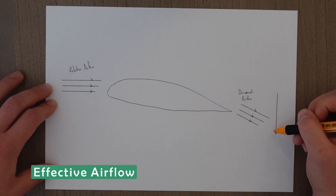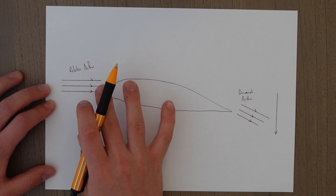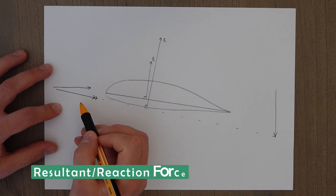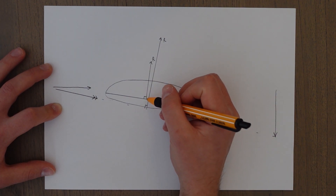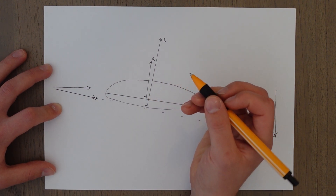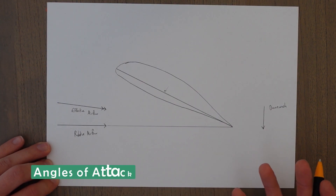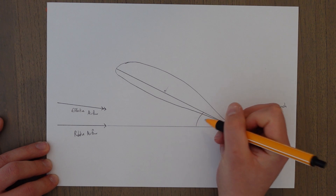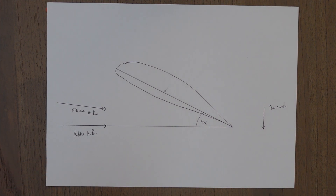The downward component of that downwash airflow, when combined with our relative airflow, will produce a new effective airflow — the airflow that actually matters — which is a combination of the relative airflow and this downward component. Our effective airflow is important because this is the airflow that determines our reaction forces. Before, we said the reaction force was roughly 90 degrees to the chord line, which wasn't entirely true — it actually is 90 degrees to our effective airflow. Because of this effective airflow, we have to define some new angles of attack.